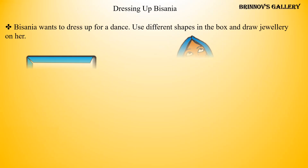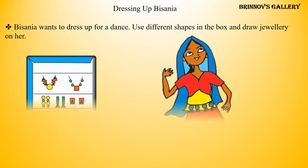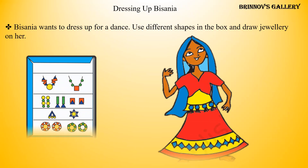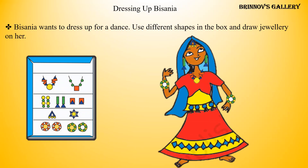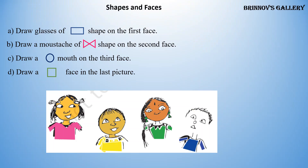Dressing up Bissania: Bissania wants to dress up for a dance. Use different shapes and draw jewelry on her. Draw glasses of a shape on the first face. Draw a mustache of a shape on the second face. Draw a mouth on the third face, and draw a full face in the last picture.